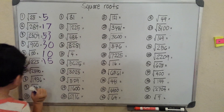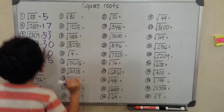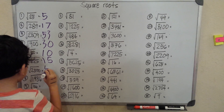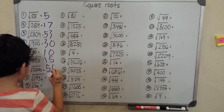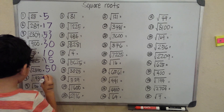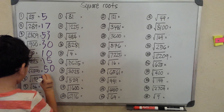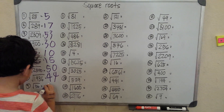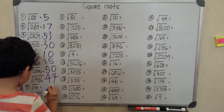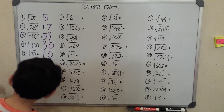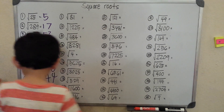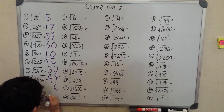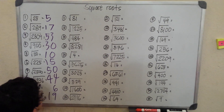Square root of 25 is 0, square root of 2500 is 50, square root of 1936 is 44, square root of 36 is 6, square root of 361 is 19.